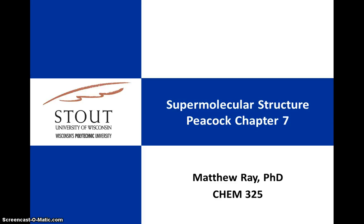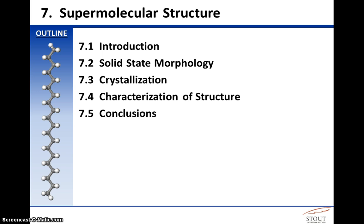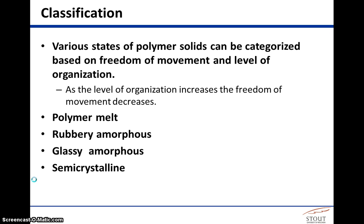Peacock Chapter 7 is on supermolecular structure, and we're going to look at solid state morphology, crystallization, and characterization of structures in polymer systems. Various states of polymer solids can be categorized based on the way that they move, and it also deals with the level of organization in each of the states that the polymer is able to exist in.